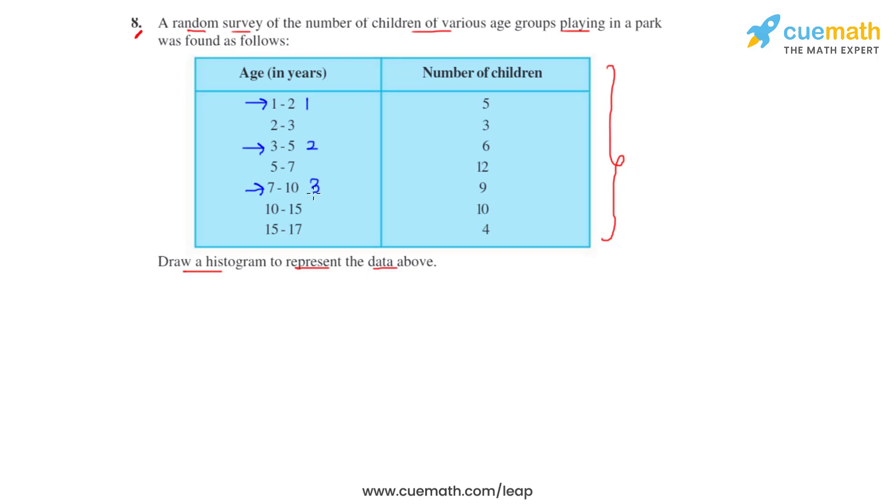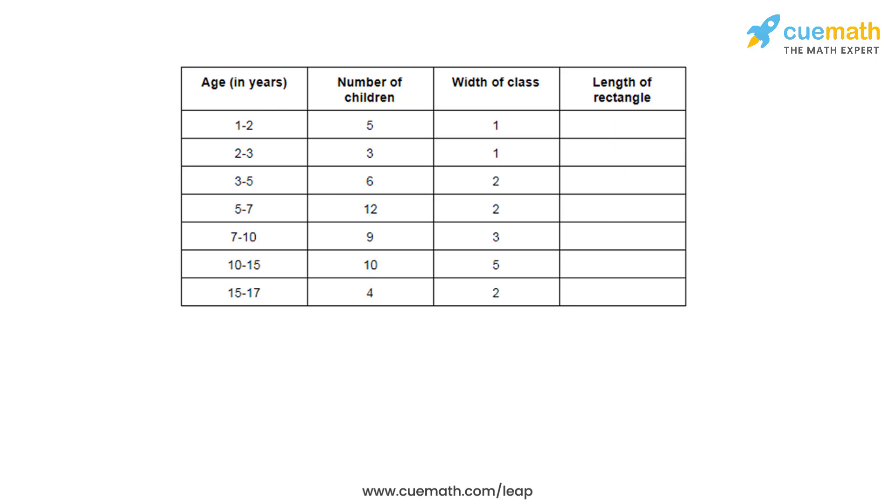To learn how we adjust a frequency in a given class interval, we will have another tabular column wherein the class intervals are given and their class widths are given. So the table looks like this. In this table we have the age of children in years, number of children associated with each class interval, and the width of each class interval.